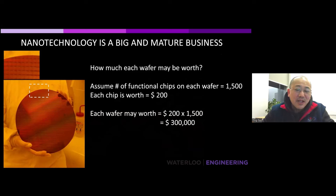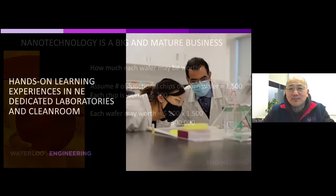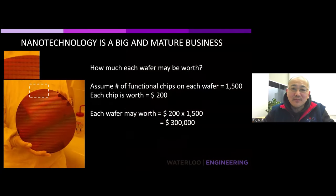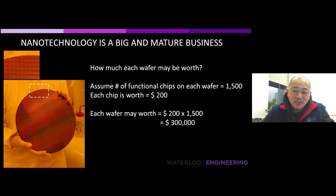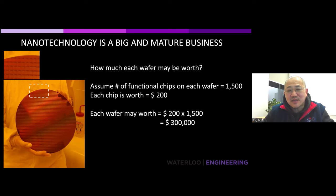This picture shows a silicon wafer — it looks shiny and pretty. Looking closer, you can see many rectangular structures; each is called a chip — the integrated circuits that go into cell phones, cars, and other applications. This is a big and mature business. A 300-millimeter wafer can hold about 1,500 chips. If each chip is worth about $200, the entire wafer is worth $300,000. At industrial scale, one wafer can be worth hundreds of thousands or even millions of dollars. Companies like Intel, Micron, Texas Instruments, and Samsung make these chips.